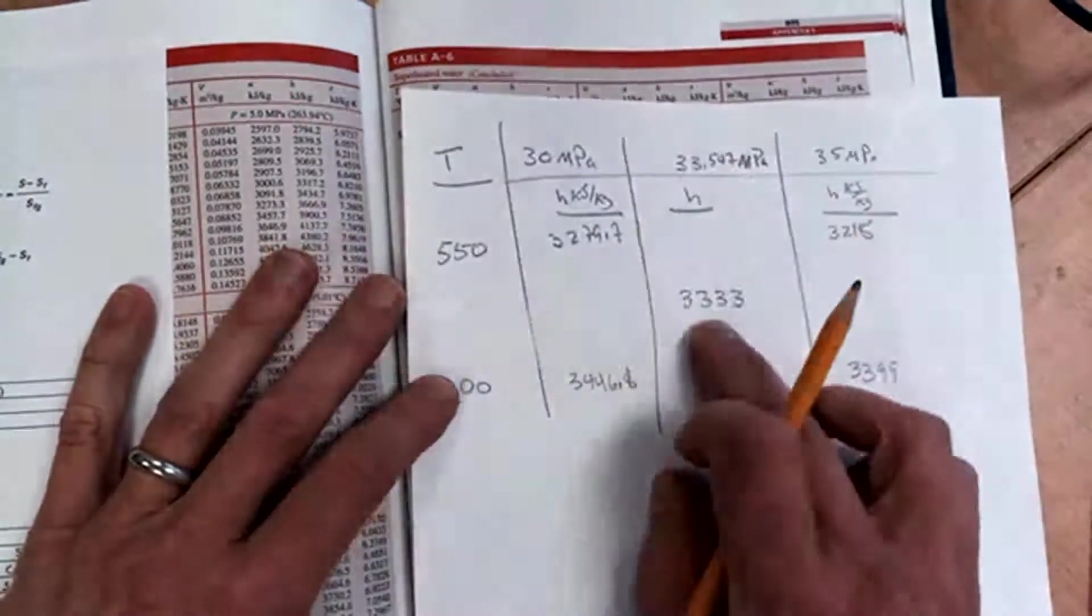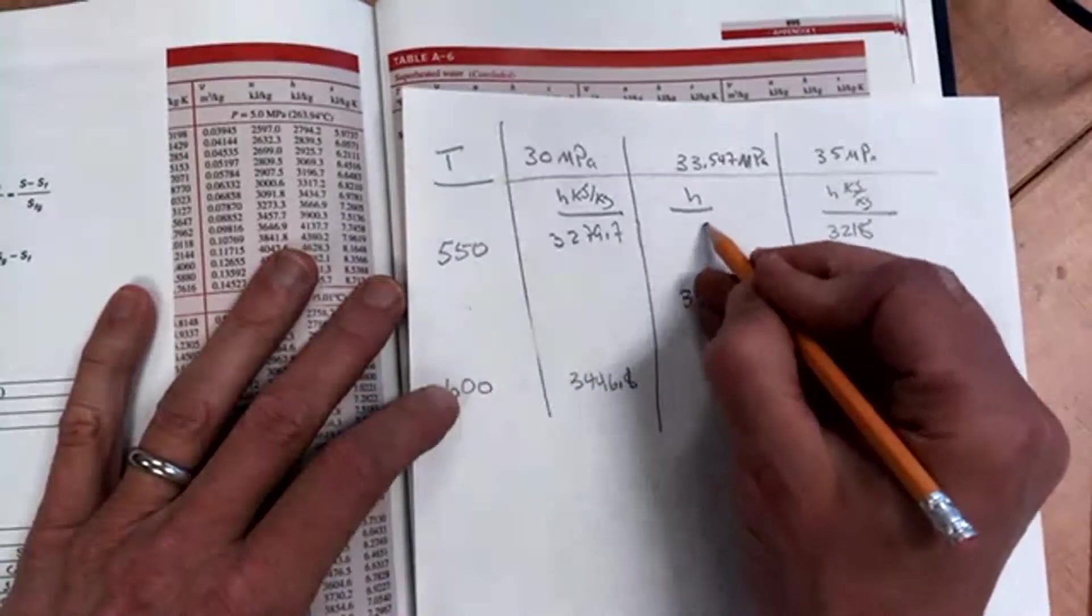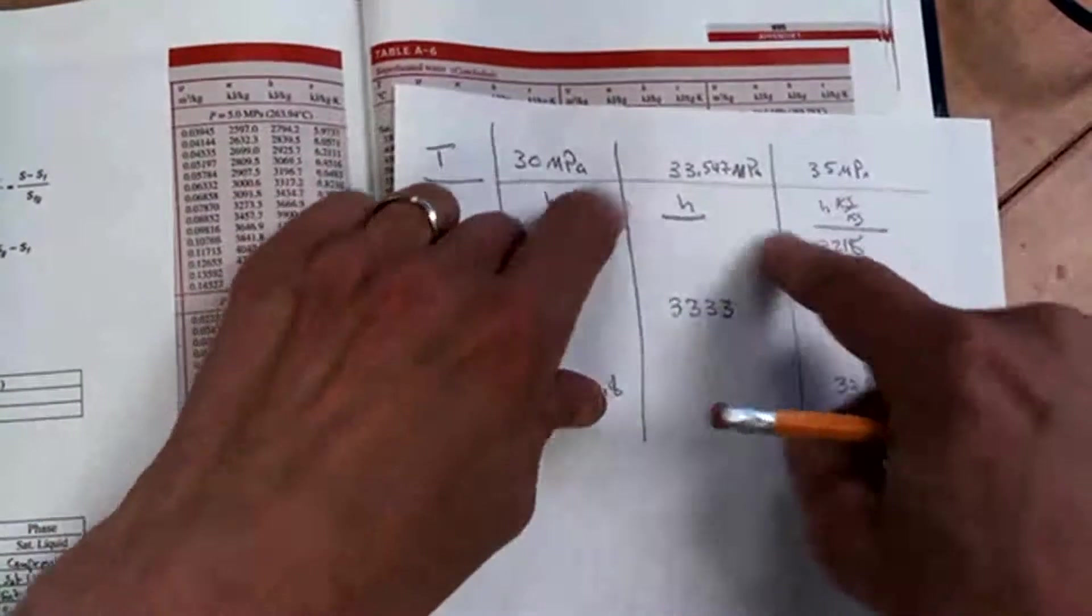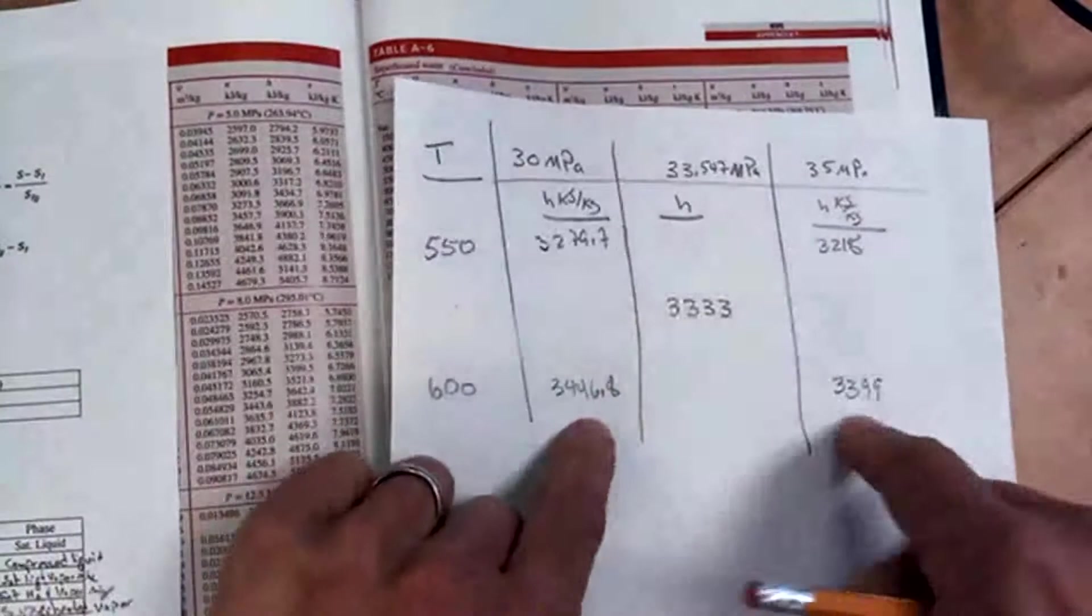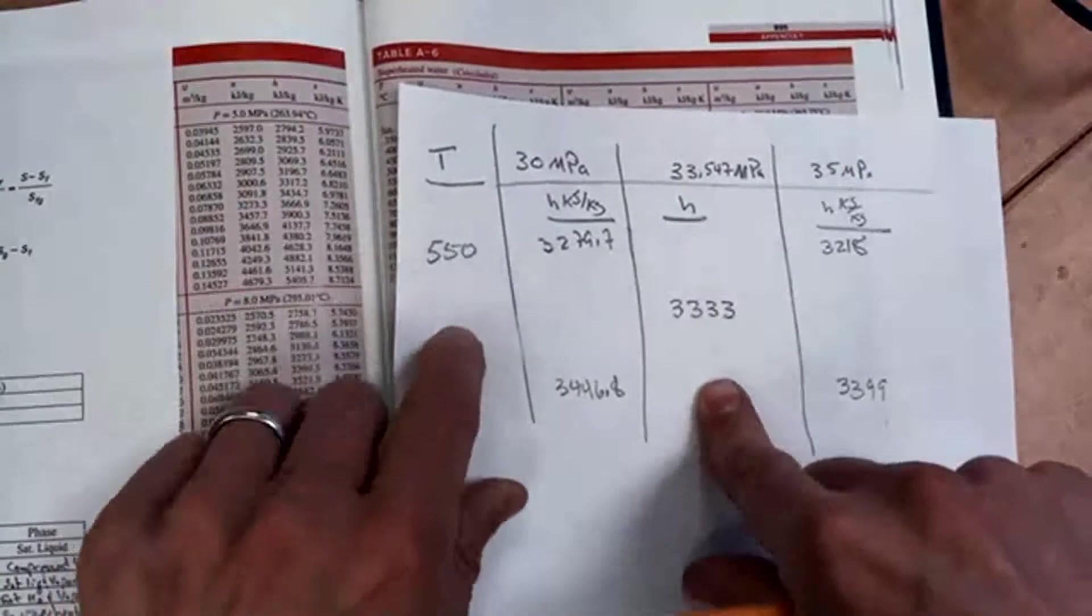I was given the pressure and the enthalpy, I'd like to know the temperature. So what I'm going to need to do is first calculate this H value and this H value, and I can do that by interpolating these values and these values. And then once I get this column filled out, I can then interpolate for the temperature.